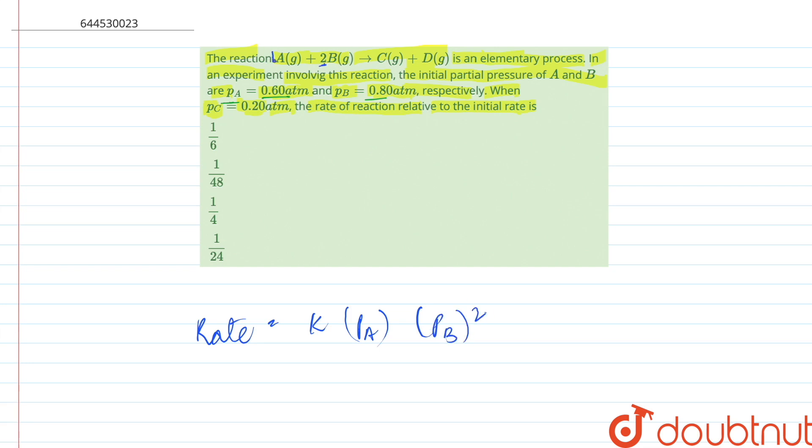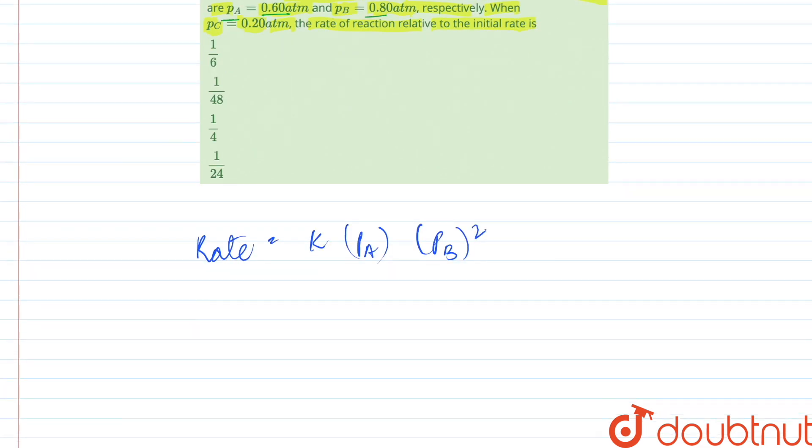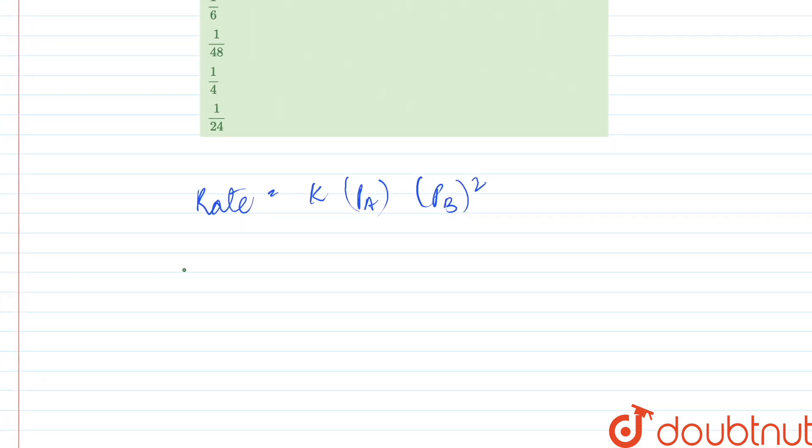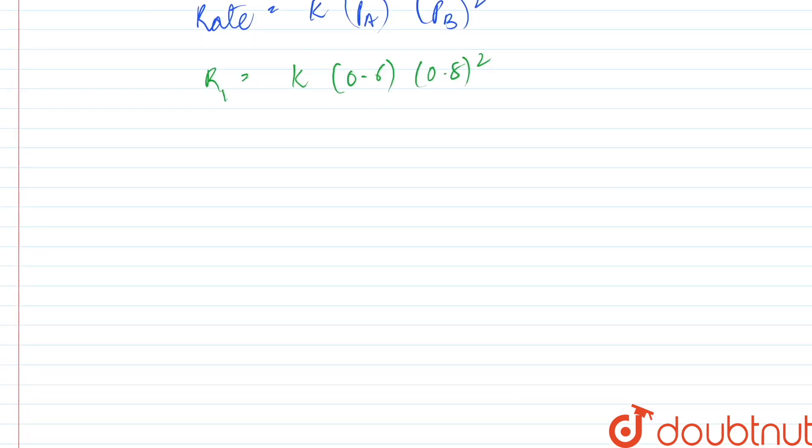Since it's 2 and 1 here, when we substitute, the initial rate r1 would be k into 0.6 into 0.8 square. Further, since we're given in the reaction that A plus 2B goes